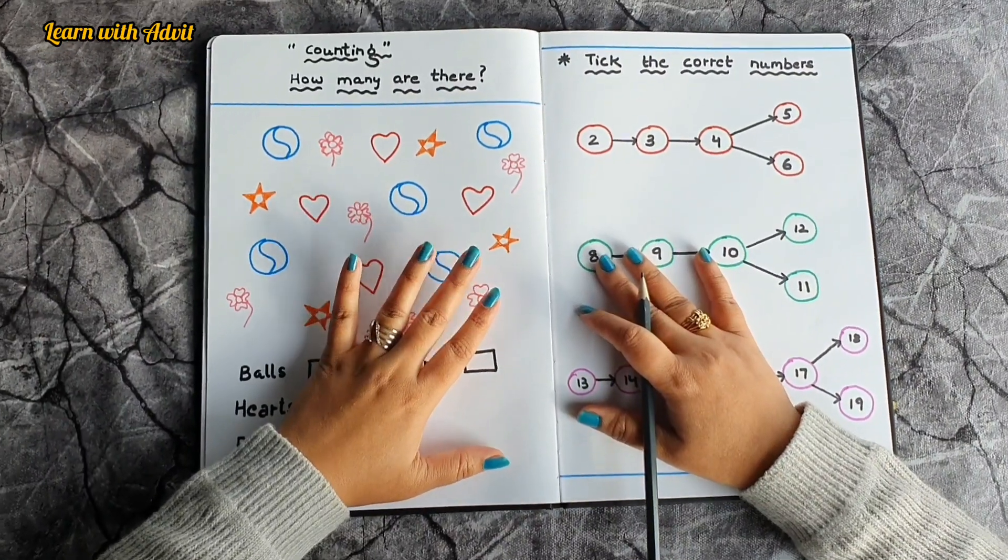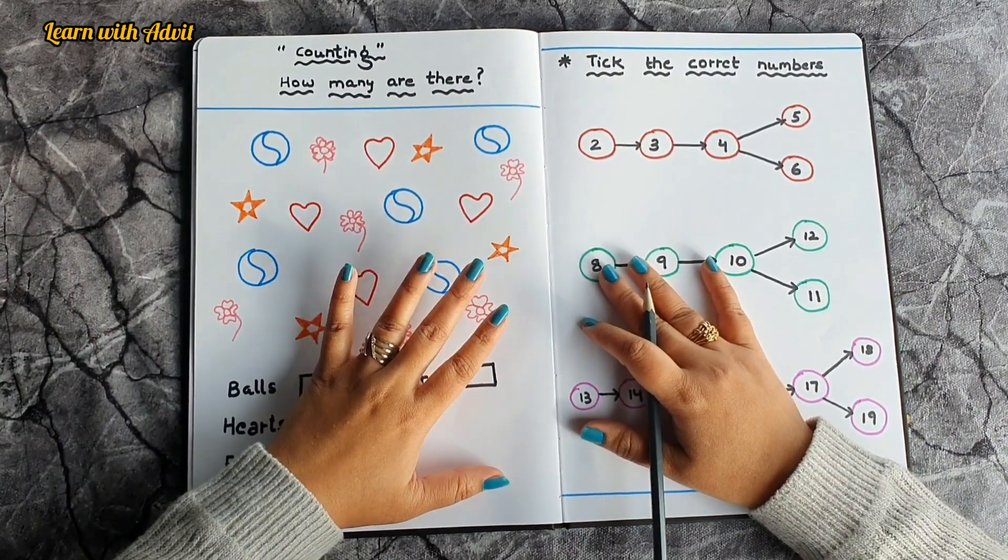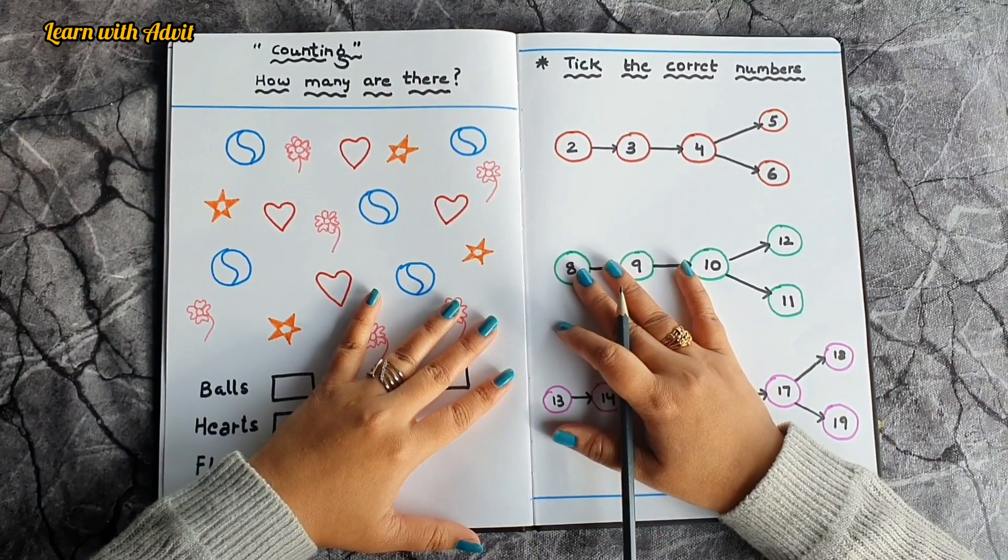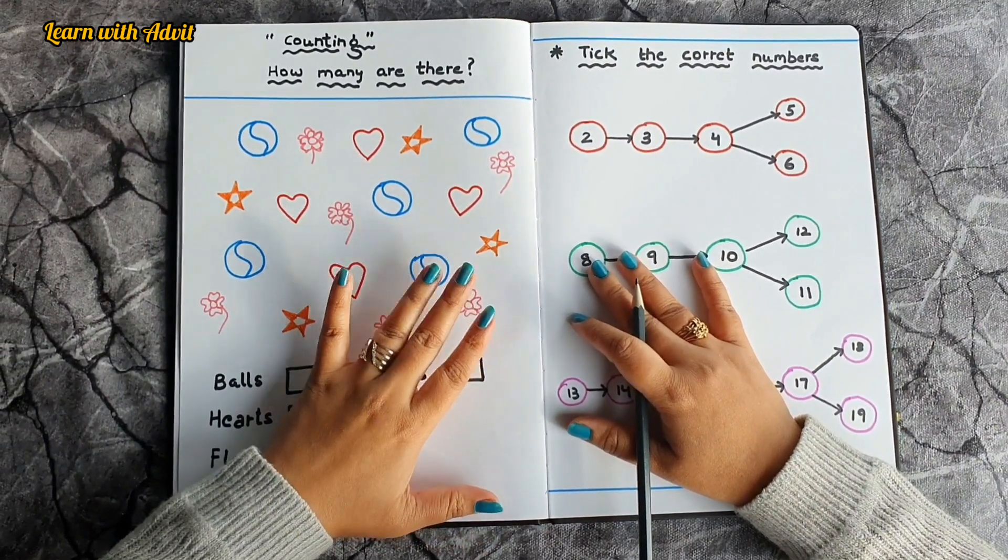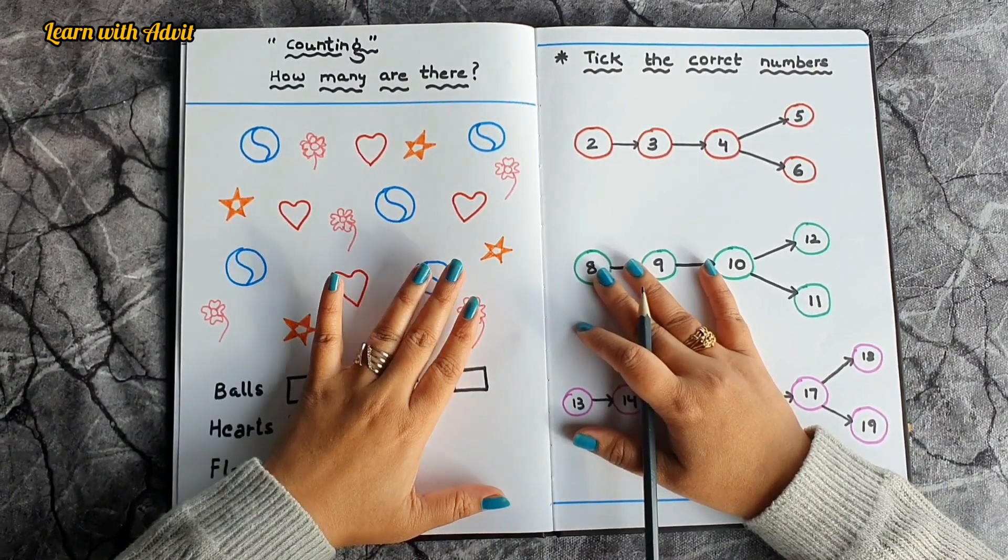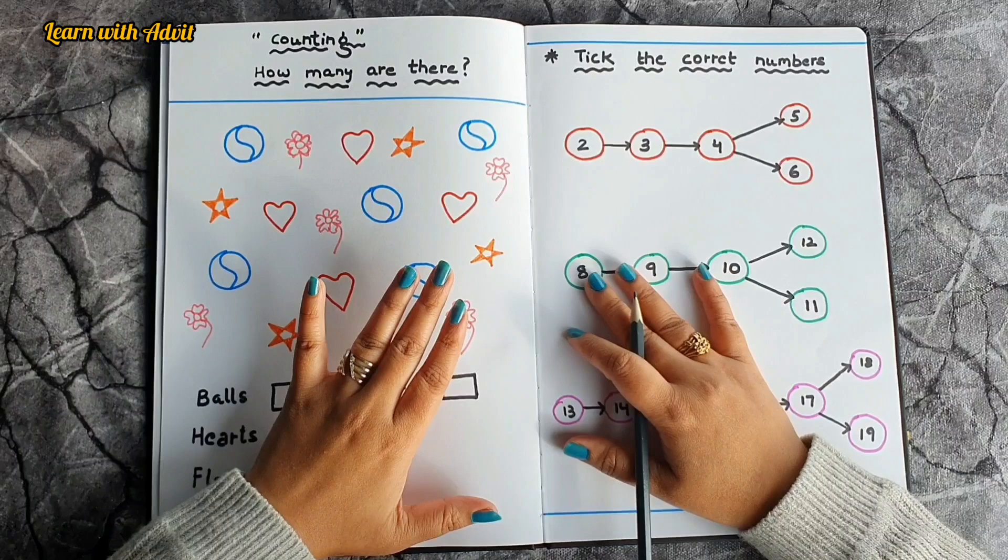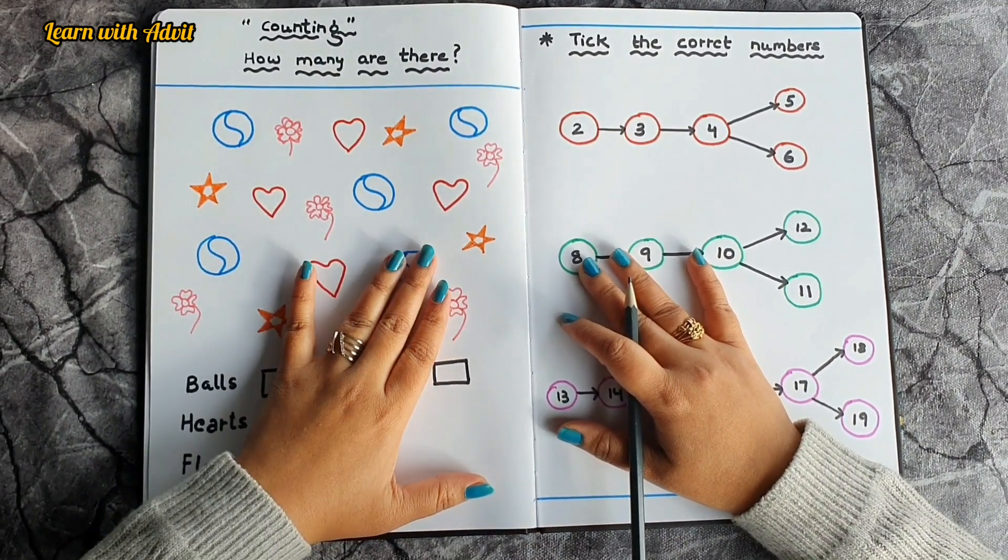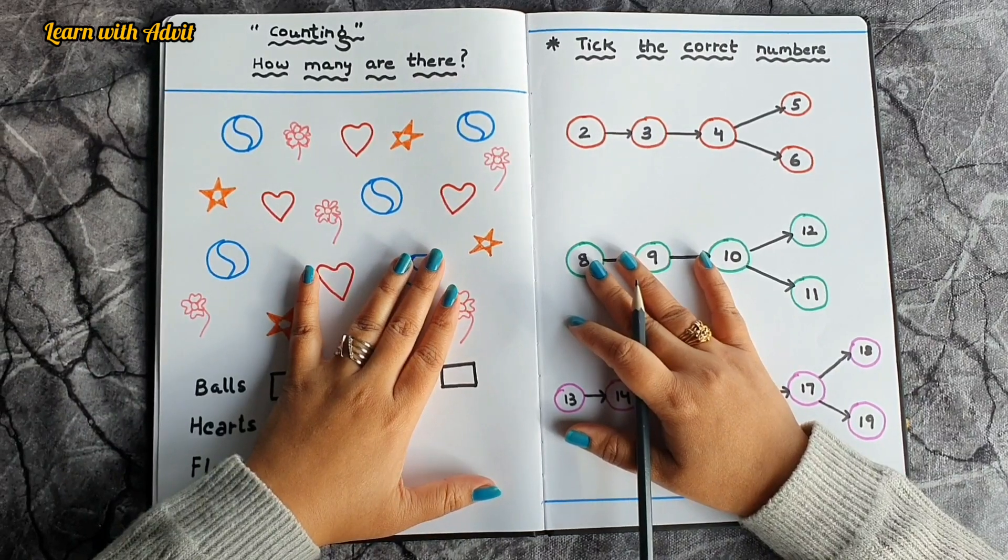Hi everyone, welcome back to our channel Learn with Advit. How are you all? I hope you all are doing great. Today's video is about daily practice LKG worksheet. I have covered topics like counting with pictures, numbers 1 to 20, and some number concepts like even numbers, big and small, number line addition. So let's get started.